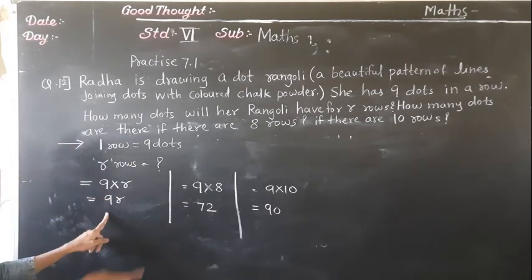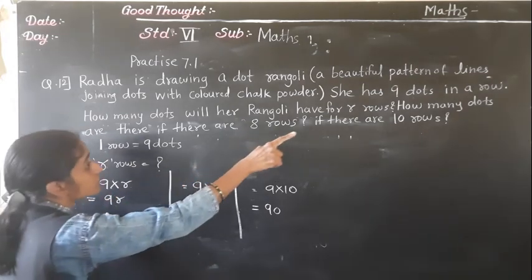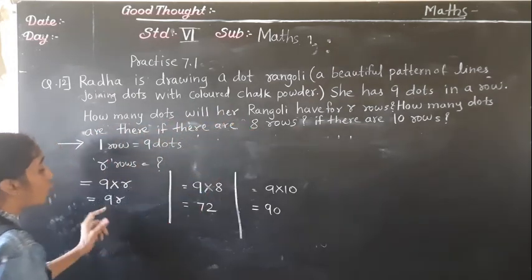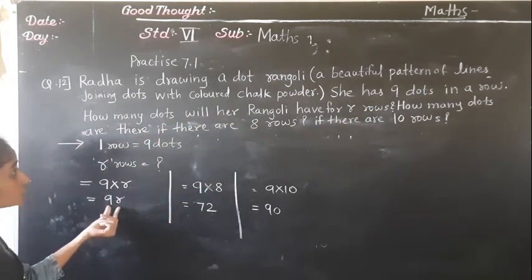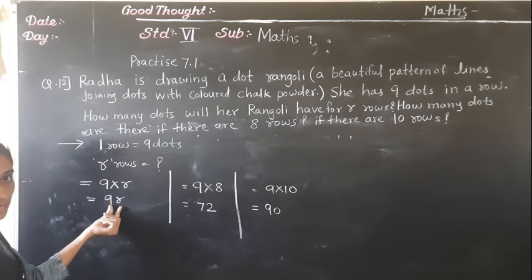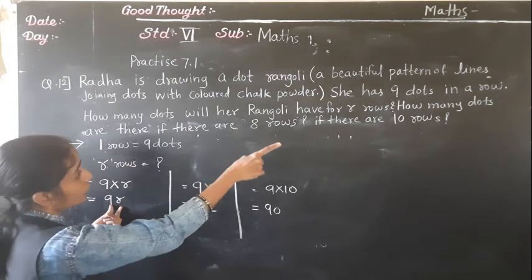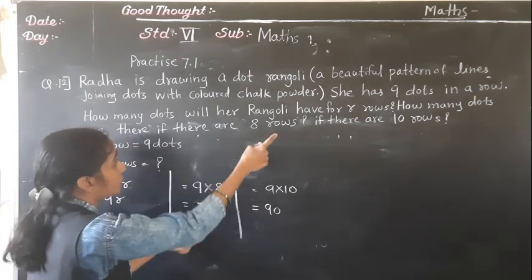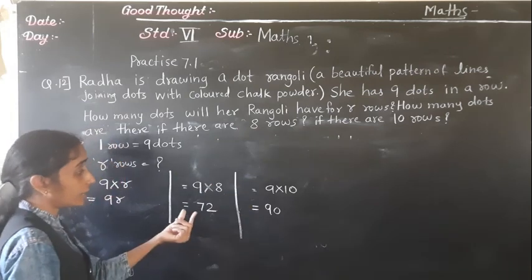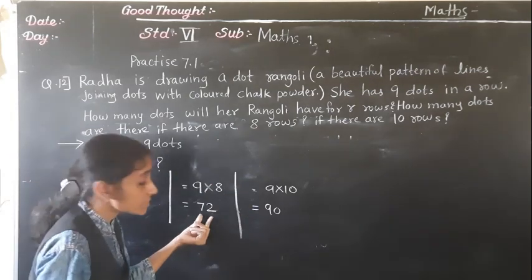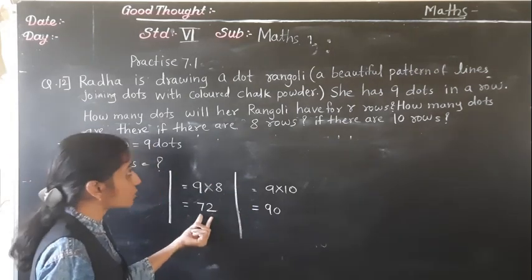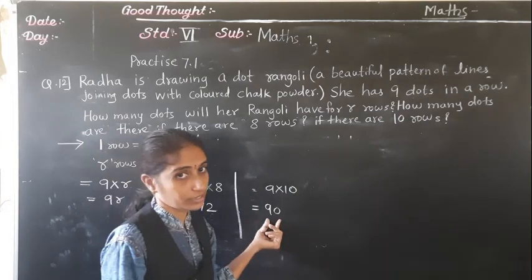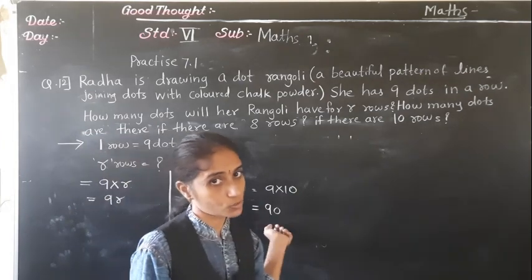So 9 into R. She has 9 dots in a row. For R rows the rule gives 9R. For 8 rows there are 72 dots, and for 10 rows there are 90 dots.